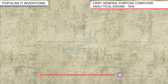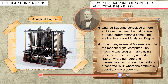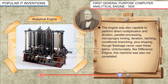Analytical Engine, 1834: Charles Babbage conceived a more ambitious machine — the first general purpose programmable computer engine, later called the Analytical Engine. It has many essential features found in the modern digital computer. The machine was programmable using punched cards. The engine had a store where numbers and intermediate results could be held, and a separate mill where arithmetic operations were performed. It was also capable of direct multiplication and division, parallel processing, microprogramming, iteration, latching, and conditional branching, though Babbage never used these terms. Unfortunately, like the Difference Engine, this machine was also not completed.